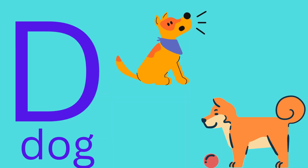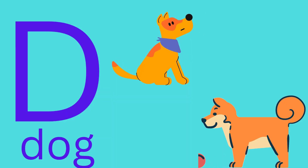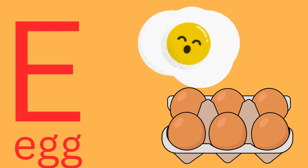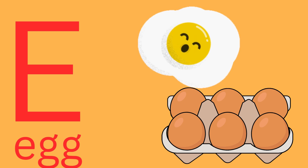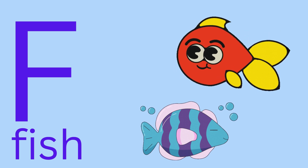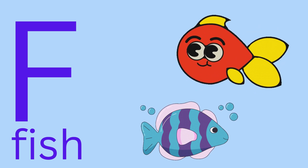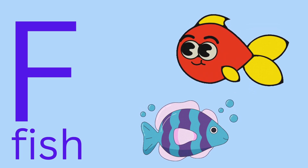D is for dog. Dog. E is for egg. Egg. F is for fish. Fish.